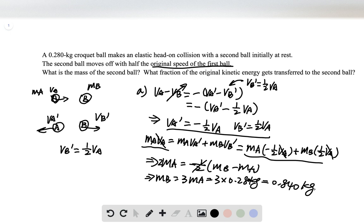For part B, it asks us to find what fraction of the original kinetic energy is transferred to the second ball. This is really just asking us to find the change in kinetic energy. The kinetic energy transferred is just the kinetic energy of B prime over the original kinetic energy of A.